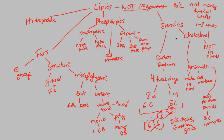Overall, we now understand the idea behind lipids. Lipids are hydrophobic and involve fats, phospholipids, and steroids. We understand why they are not polymers — because they do not have many identical subunits combined together; they only have about one to three units. That ends our discussion on biological molecules.